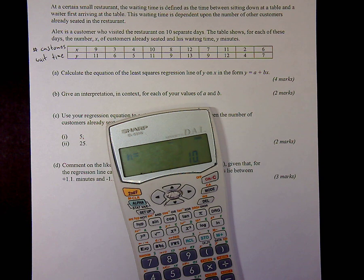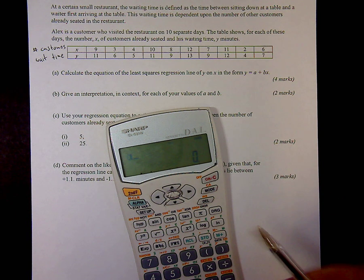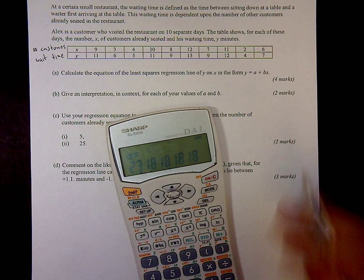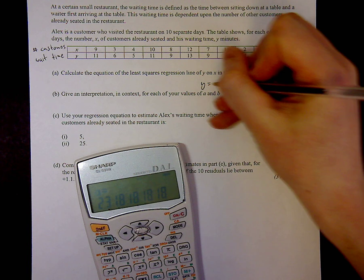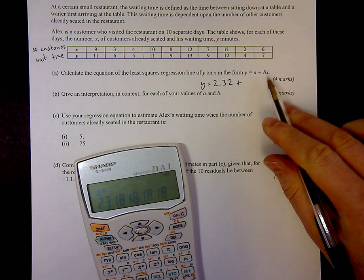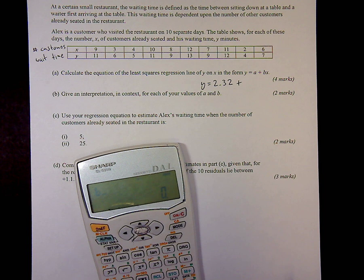All you need to do then is find your values of A and B. Just press alpha A, doing A equals 2.318, so I'll say it's about 2.32. So it's going to be y equals 2.32 plus, and then we'll find the value of B using the same method. Alpha B equals 0.886.